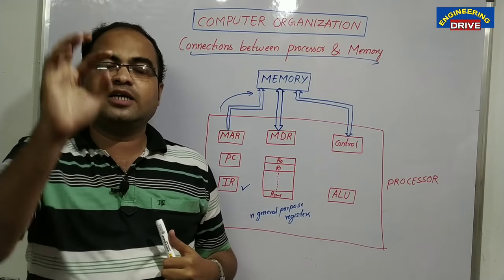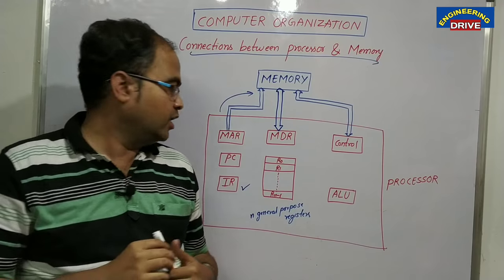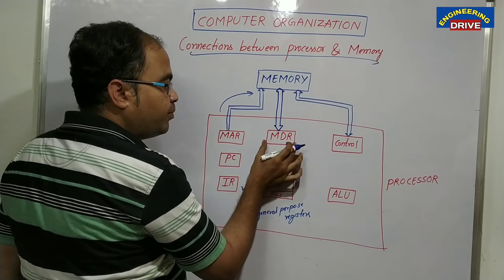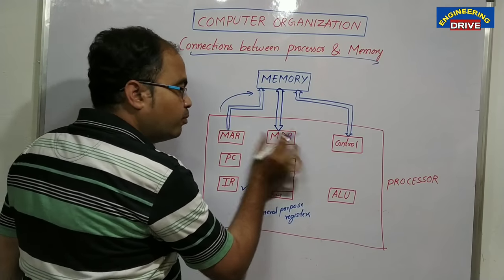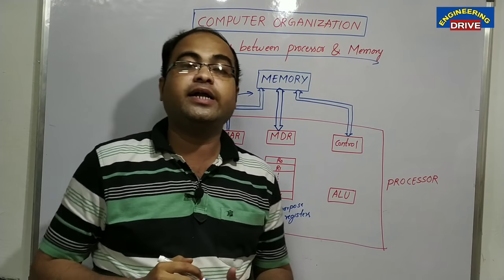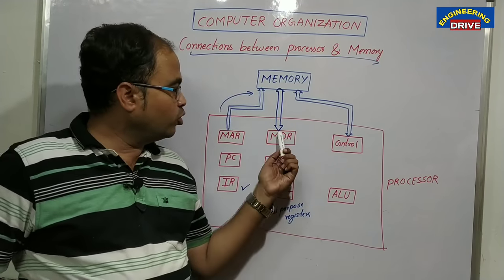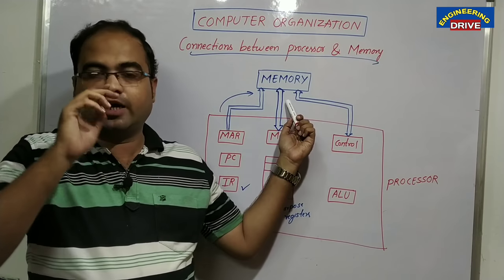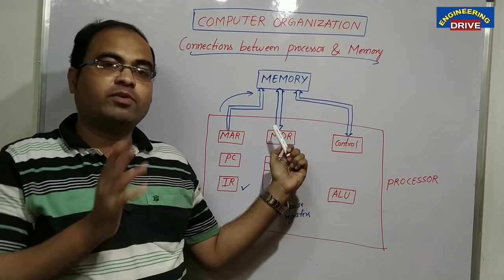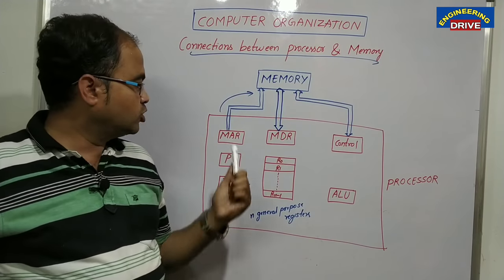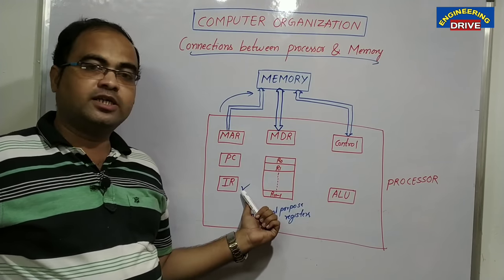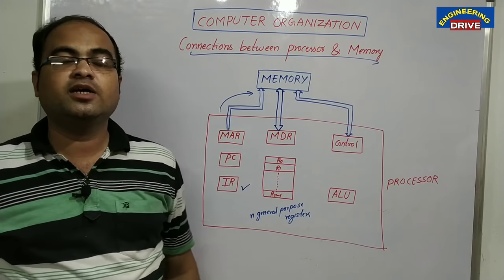The instruction register stores the currently executed instruction — whichever instruction the processor has taken from memory will be stored in IR. Not only that, a copy of that instruction will also be stored in one more register called MDR — Memory Data Register. The double-sided arrows here indicate that data can be passed not only from main memory to MDR but also from MDR back to main memory.